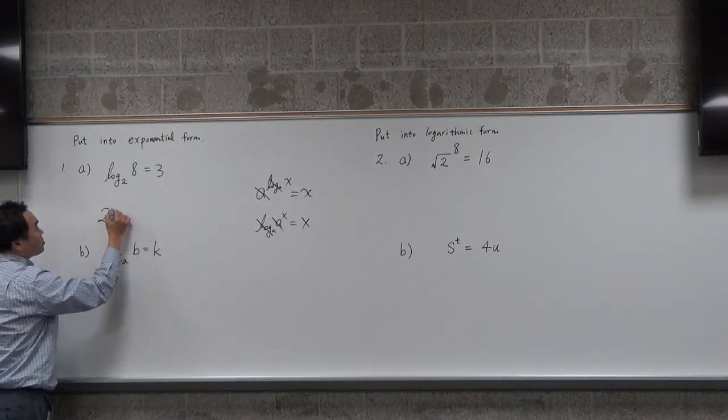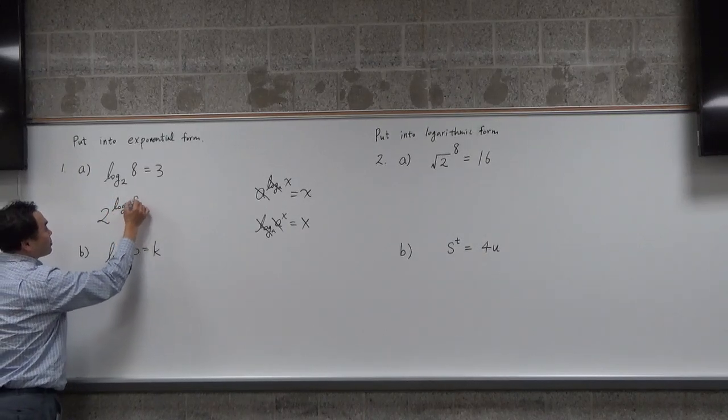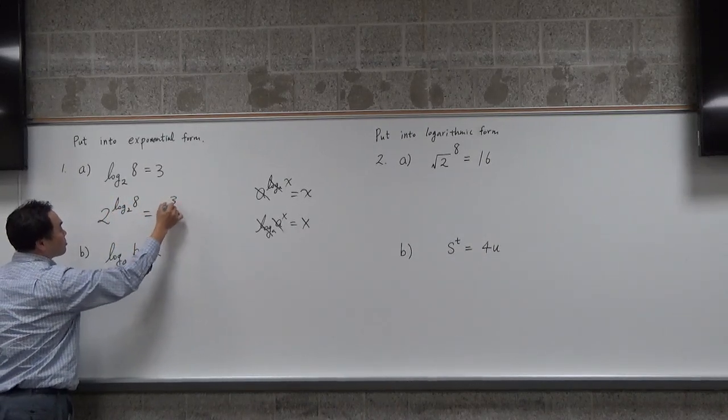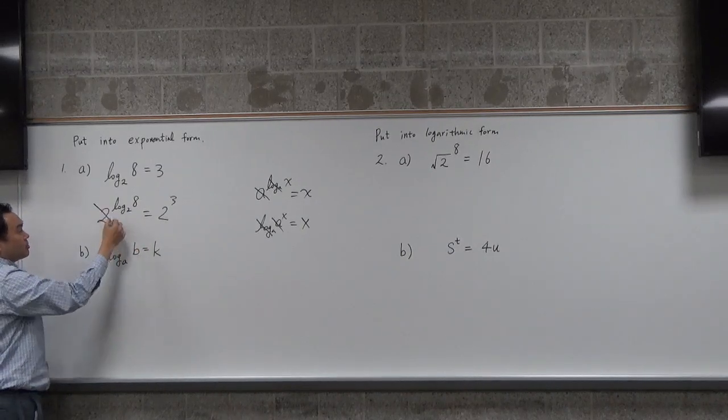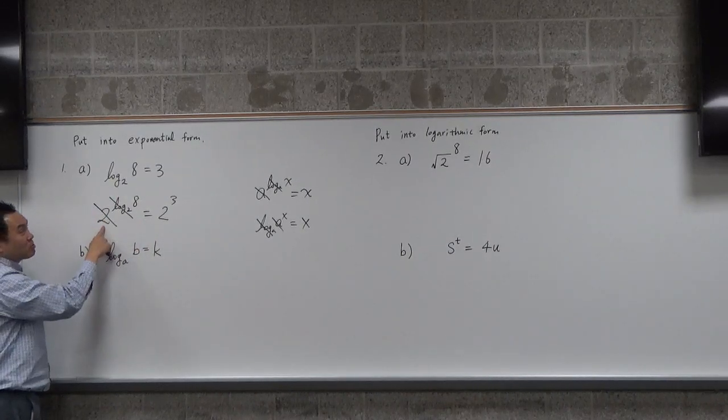So for this one, you put 2 log base 2 of 8 equals to 2 to 3. You just raise both sides to the power of 2, and that's going to cancel.